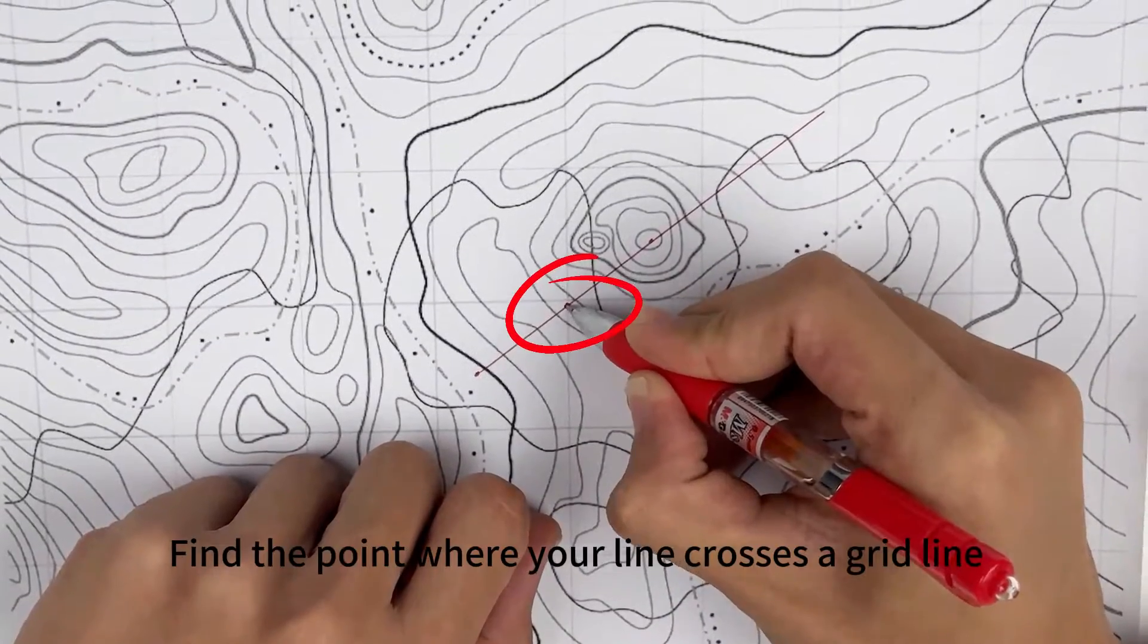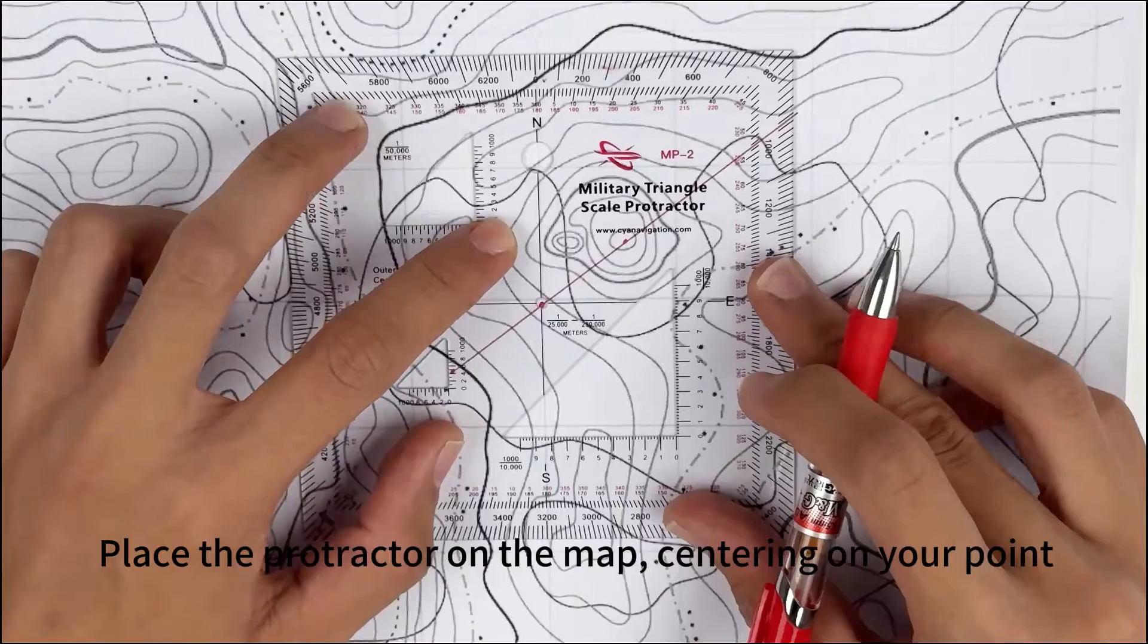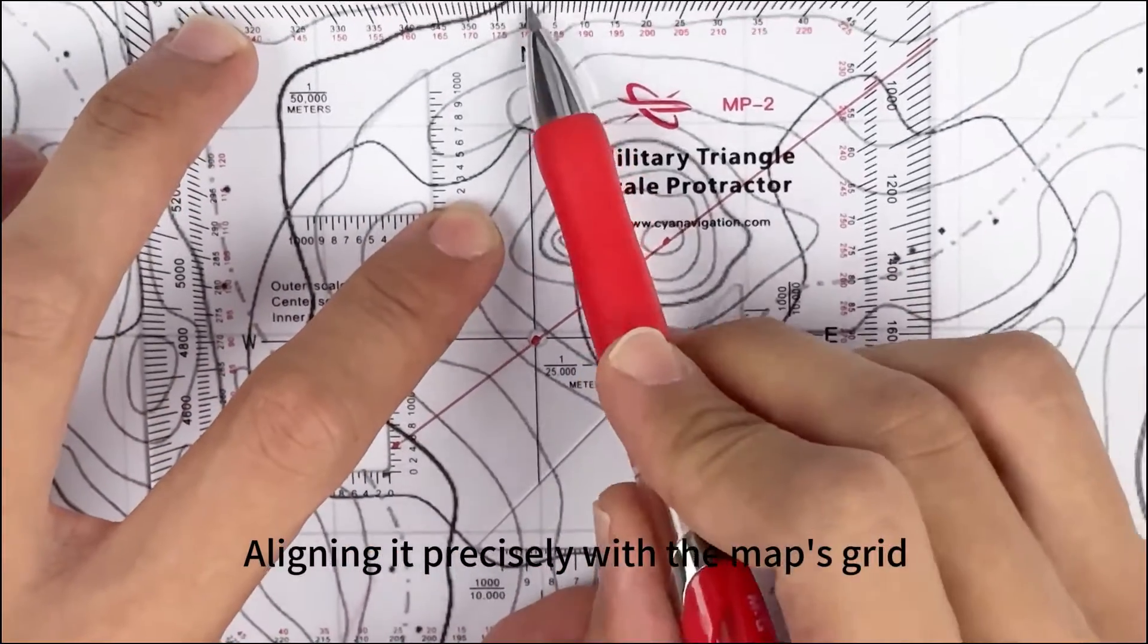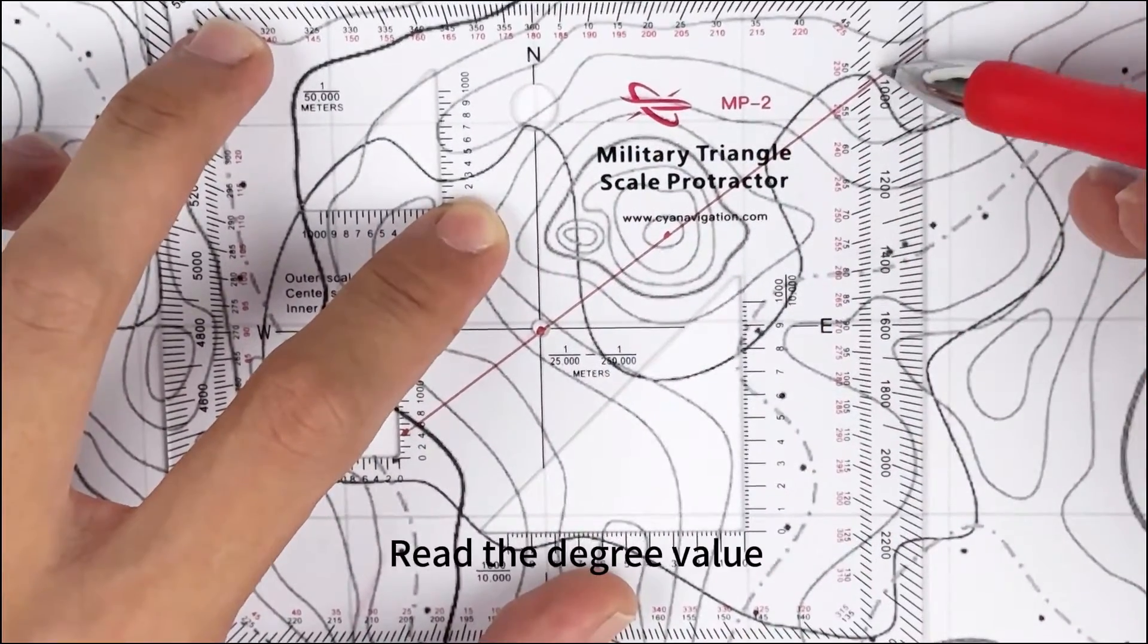Find the point where your line crosses a grid line. Place the protractor on the map, centering on your point, aligning it precisely with the map's grid. Read the degree value.